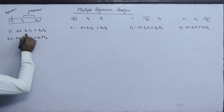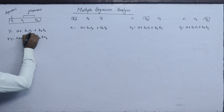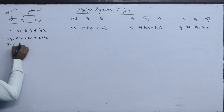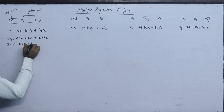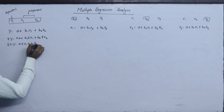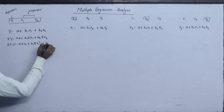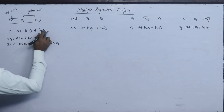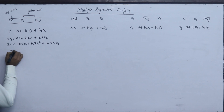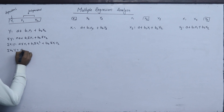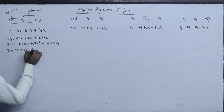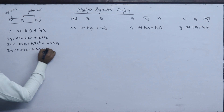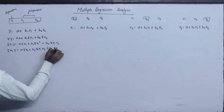Multiplying by the independent variable x1: summation x1·y equals to a summation x1 plus b1 summation x1 squared plus b2 summation x1 x2. Then multiplying by x2: summation x2·y equals to a summation x2 plus b1 summation x1 x2 plus b2 summation x2 squared.